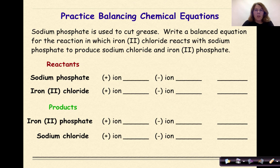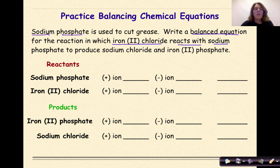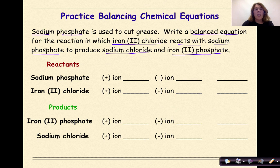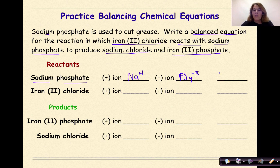Let's do some more practice with balancing chemical equations, adding a twist by also writing chemical formulas. We're given the following word equation: sodium phosphate is used to cut grease. Write a balanced equation for the reaction in which iron two chloride reacts with sodium phosphate to produce sodium chloride and iron phosphate. It is very important to write the correct chemical formulas before writing the chemical equation. Sodium phosphate: Na+ and PO4^3-, crossed subscripts give Na3PO4.